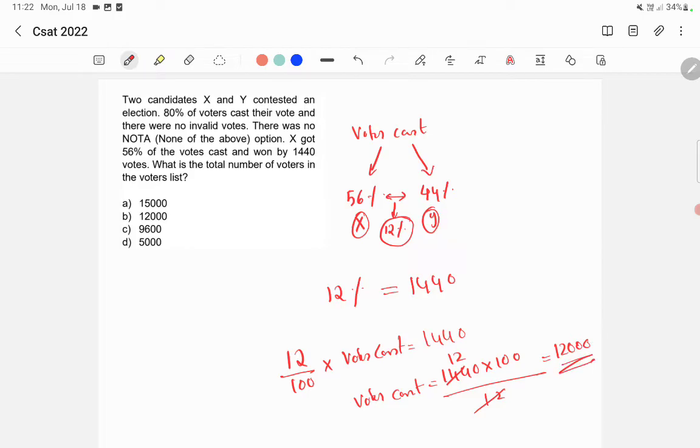So total number of votes casted is 12,000. So we need to find out the total number of voters in the voting list. So out of the total voters in the voting list, 80% have casted their votes. So 80% of total voters is equal to 12,000. So 80 by 100 into total voters is equal to 12,000. Then total voters is equal to 12,000 into 100 by 80.